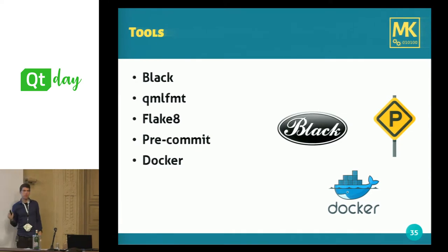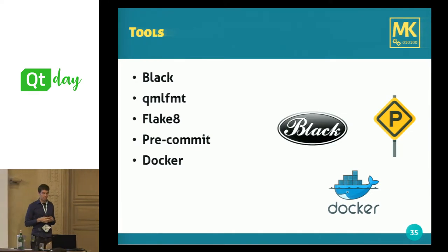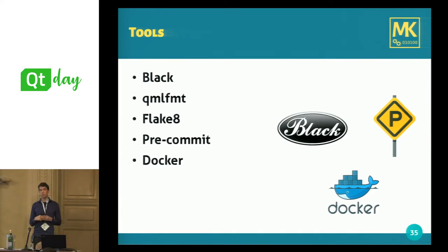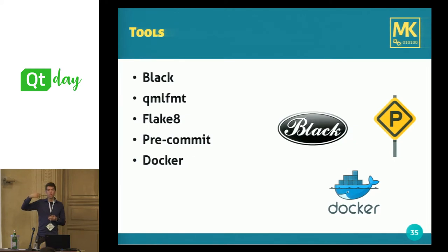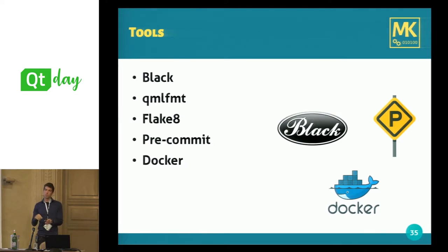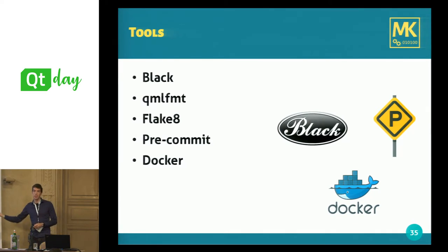That brings me to pre-commit, a framework from the Python community — but not only for Python, it can also be used for C++ projects. It automatically runs these tools when you do a commit. You can attach it as a git hook, and when you run git commit, it will automatically execute Black, QML format, Flake8, Clang format, or whatever tools you want to use.